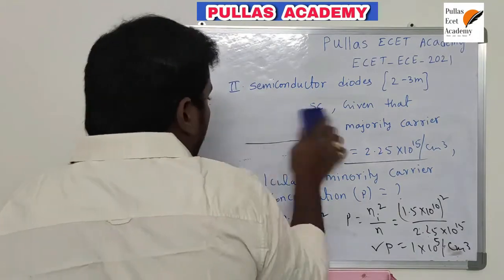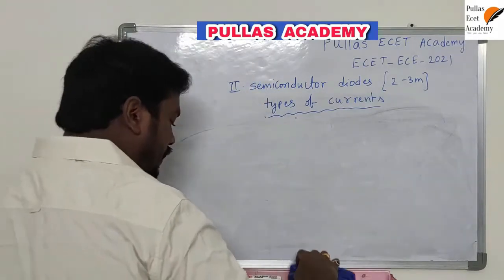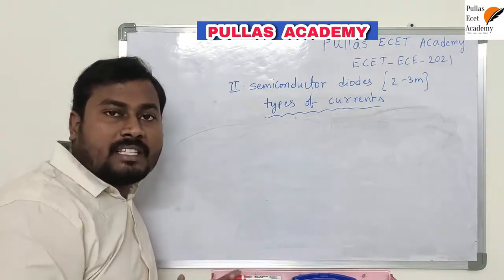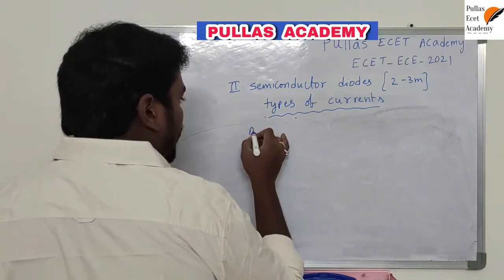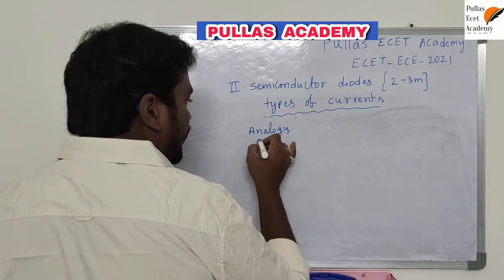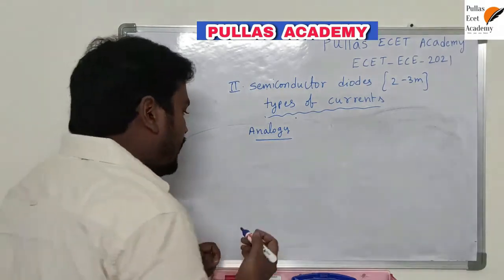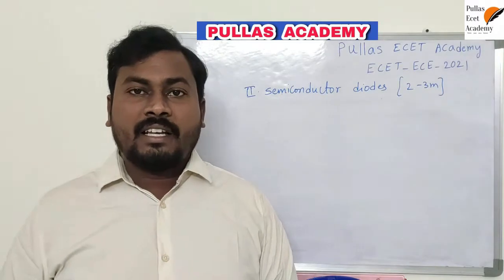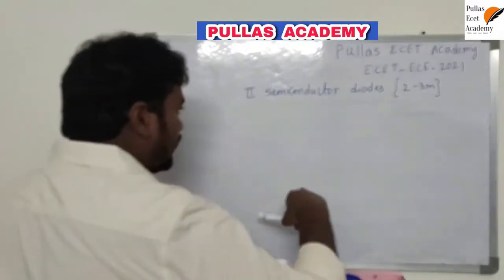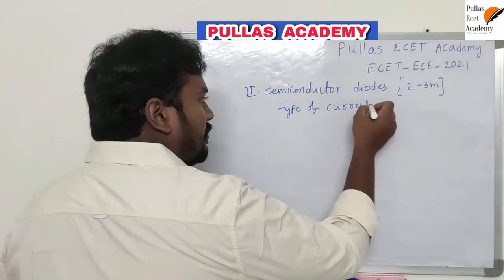Now let me explain the types of currents in a semiconductor. We will discuss this with a simple analogy involving a sweet box. Let me write here: types of currents in a semiconductor.